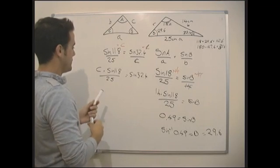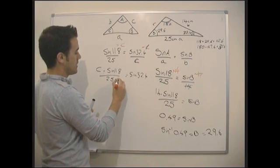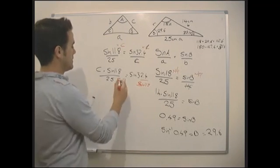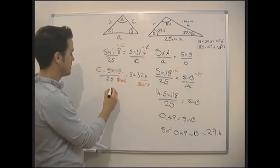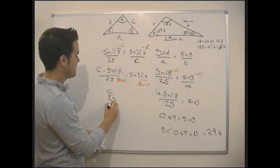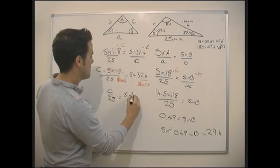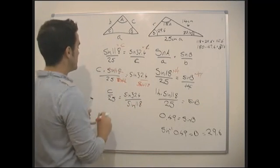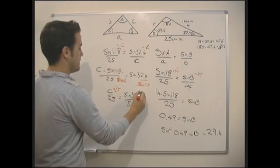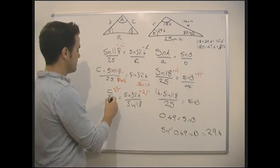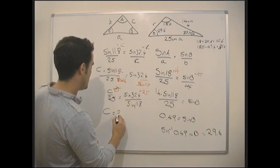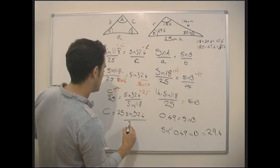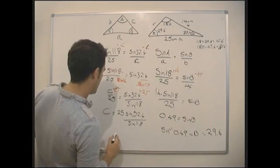Let's divide both sides by sine 118. We're going to cancel from here. So we end up with C over 25 equals sine 32.4 over sine 118. And then we times both sides by 25. That's going to cancel the 25. So we end up with C equals 25 sine 32.4 all over sine 118.